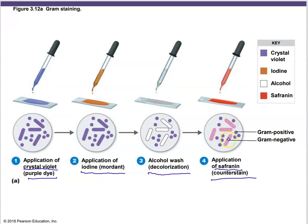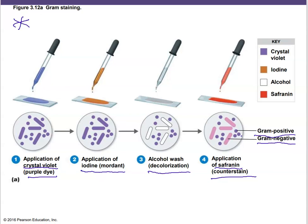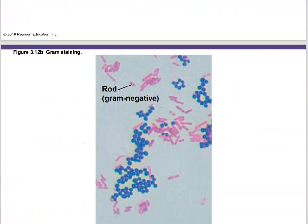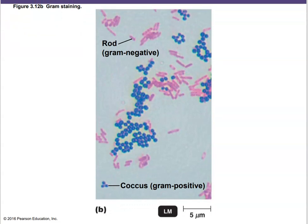After the safranin counter stain, gram negative bacteria will appear pink and gram positive ones will remain purple. You can see gram positive cells here as purple spots and gram negative ones as pink rods. Be sure you know every bit of the gram stain — it is super important. If you have a mixture of bacteria and do a good gram stain, you should see gram positive cocci as small purple dots and gram negative rods as pink elongated cells.